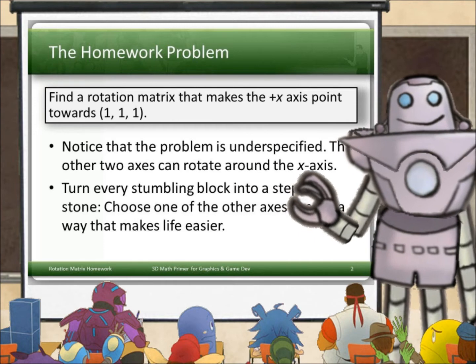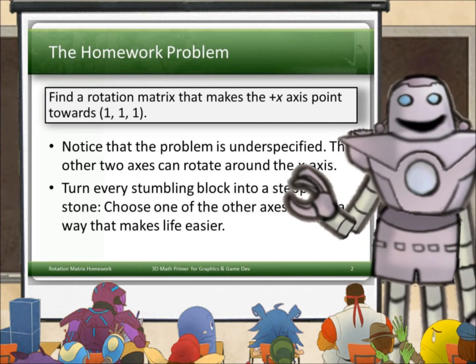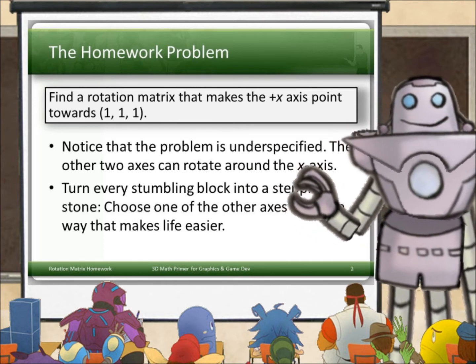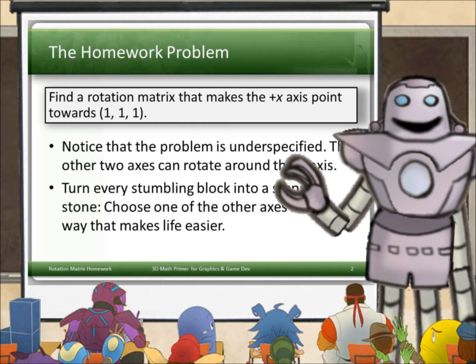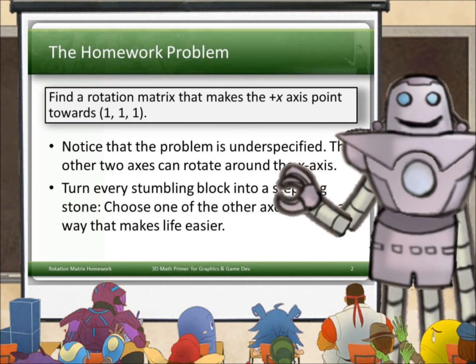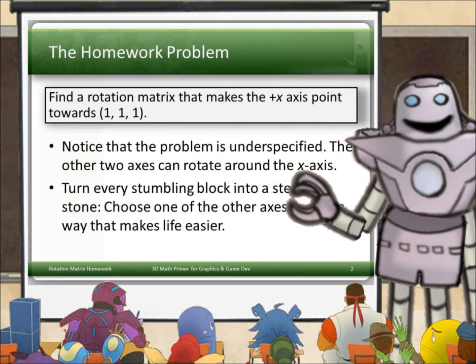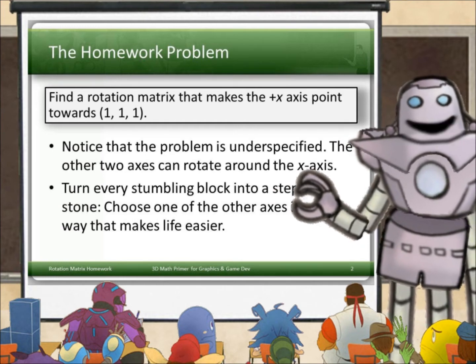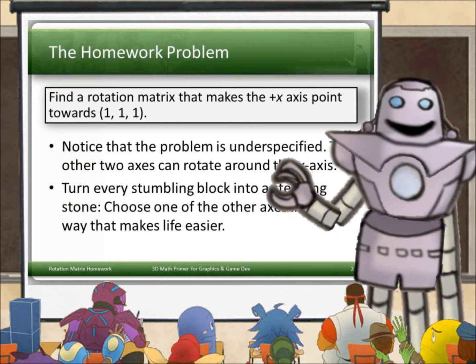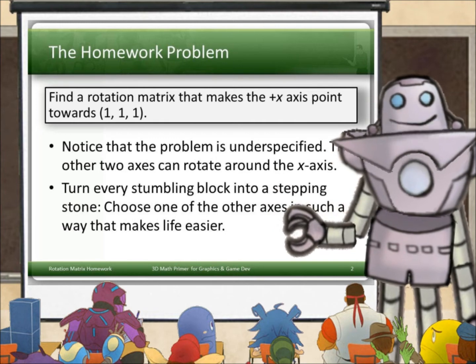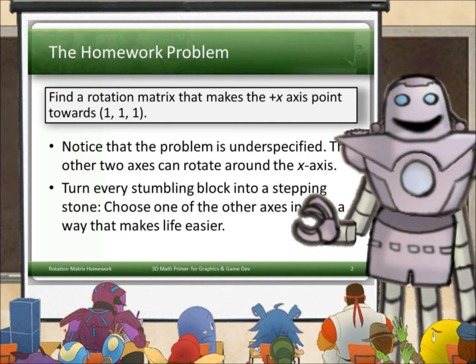Now, notice that this problem is underspecified. I've only specified one axis. The other two axes can rotate about the x-axis. This gives us some freedom and enough rope to hang ourselves. But let's stay positive.